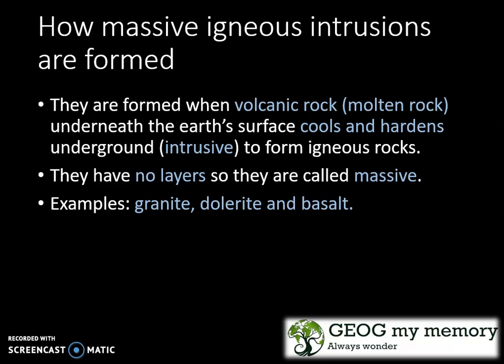They are formed when volcanic rock, which is your molten rock, underneath the earth's surface cools and hardens underground, becoming intrusive to form igneous rocks. They have no layers, so they are called massive. Examples of them include granite, dolerite, and basalt.